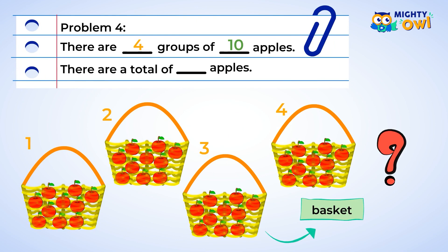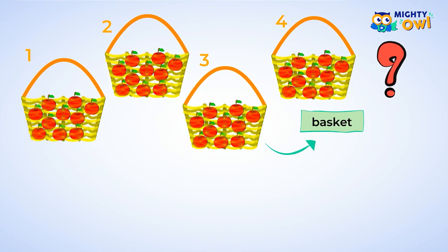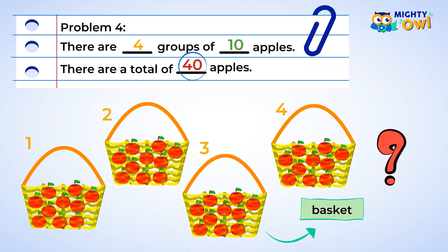You have determined that there are four groups of ten apples. You can now write this as a multiplication sentence. Four groups of ten is written as four times ten. Four tens is also known as forty, so there are a total of forty apples.